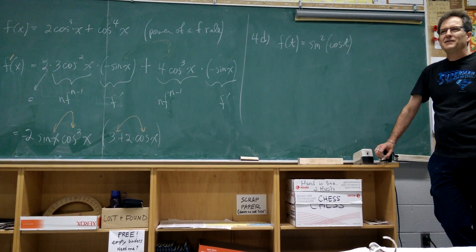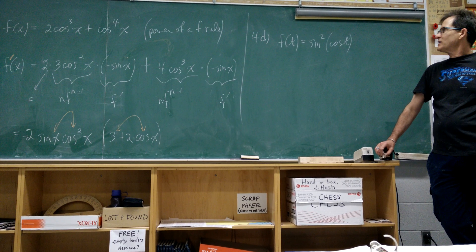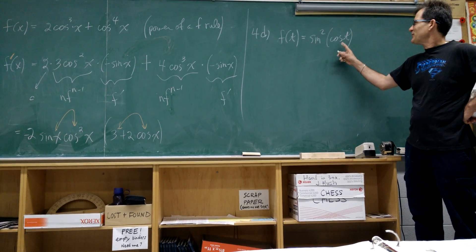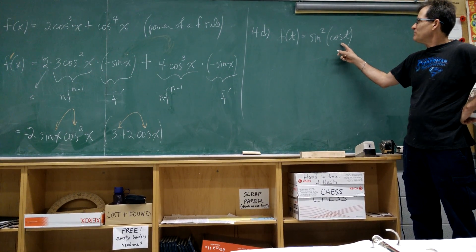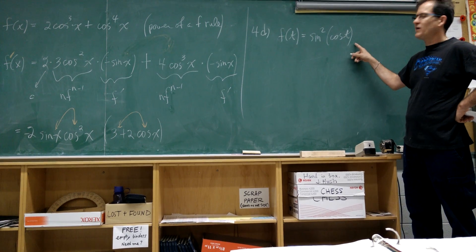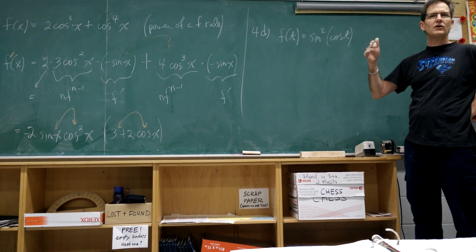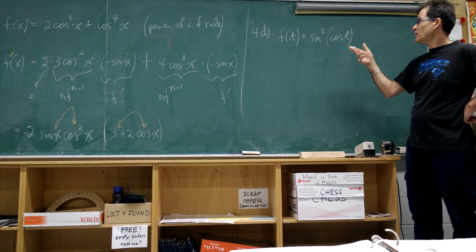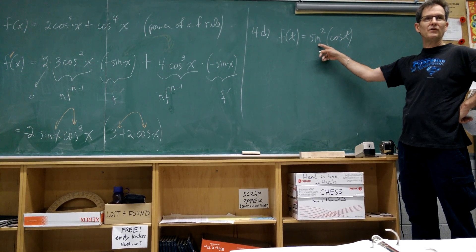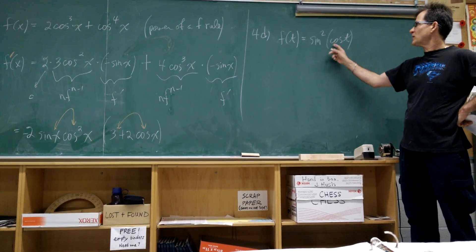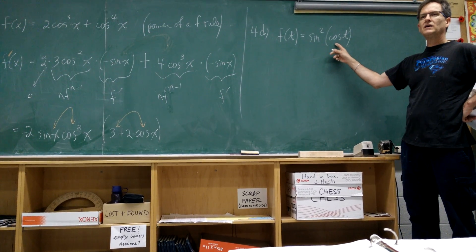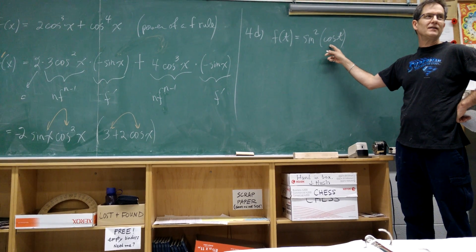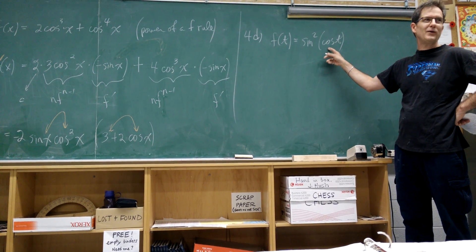Chain rule? Yes, we have to use the chain rule because this is not just t — this is some function of t. But basically, what is this function? Is it a product, a quotient, a power of a function? Not a product — sine by itself is meaningless here. Sine squared is not a product of two functions. This is a power of a function.